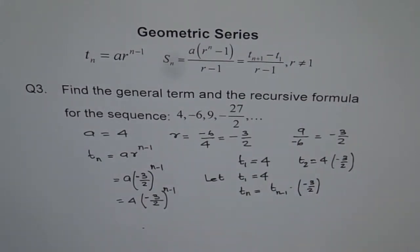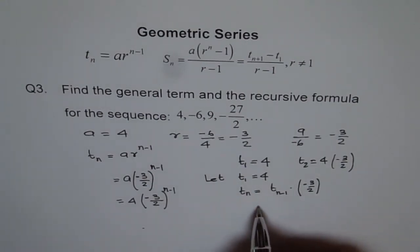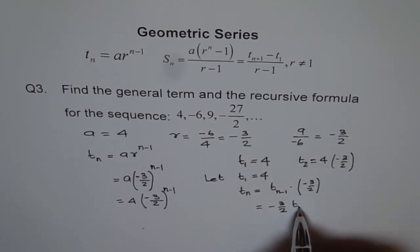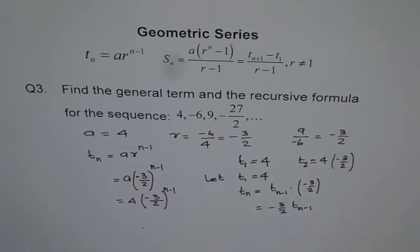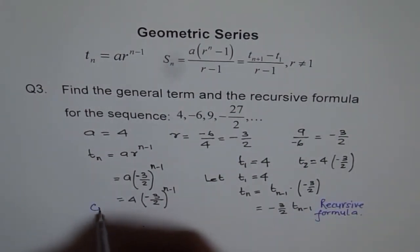So that becomes your recursive formula. A better way to write this is minus 3 over 2 Tn minus 1. So that is our recursive formula. So we can write this as recursive formula. And that is our general term.